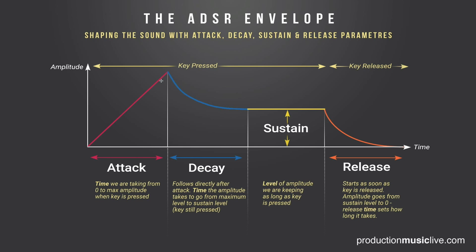Once the maximum amplitude is reached, what follows is the decay time. Decay time is another parameter — mostly in milliseconds, could be seconds as well — that takes our signal level down from maximum amplitude to the sustain level, the level we keep as long as we are holding the note or pressing the key. This is another time parameter, might be a couple of milliseconds or seconds.